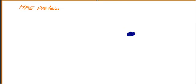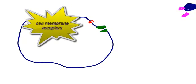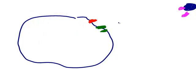Imagine this is the transferrin, and on the transferrin you have the iron. This is the cell — let's talk about macrophages. On macrophages you have two types of receptors: transferrin receptors and HFE gene receptors with beta-2 microglobulin on them.